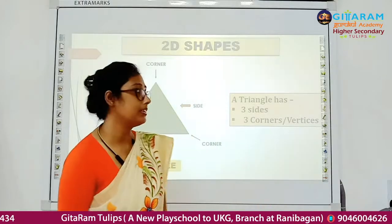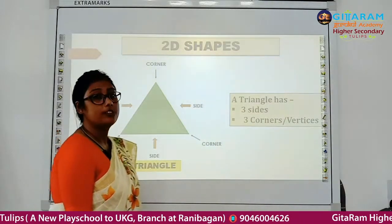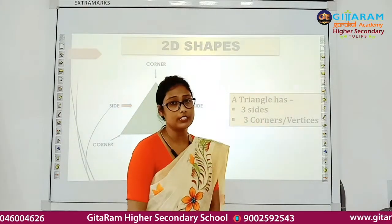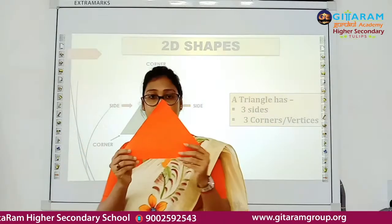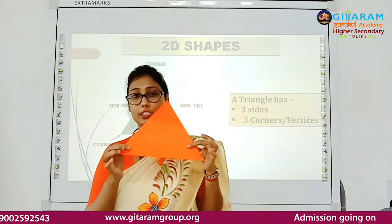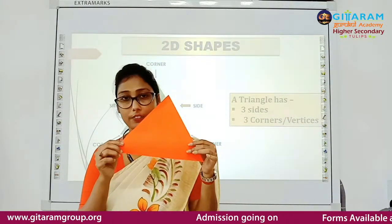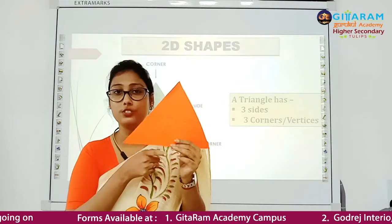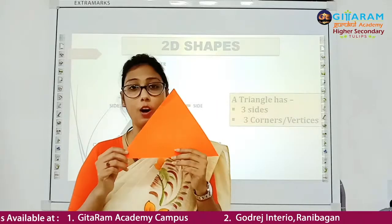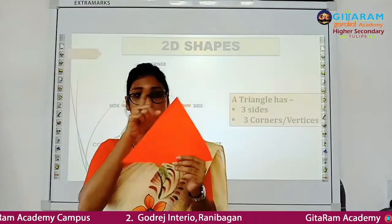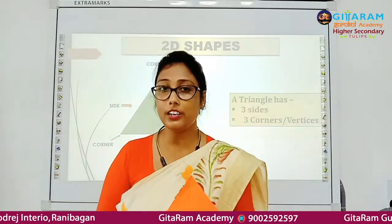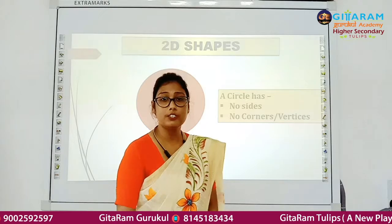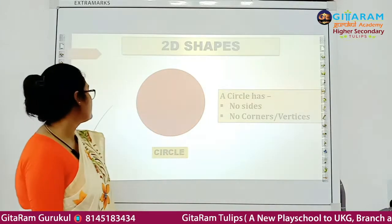Our next 2D shape is triangle. Triangle has three sides and three corners or vertices. Students, it is a triangle — no thickness, no depth, on a flat surface. It has three sides: 1, 2, 3. And three corners: 1, 2, 3. So a triangle has three sides and three corners.